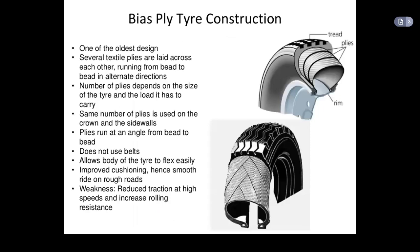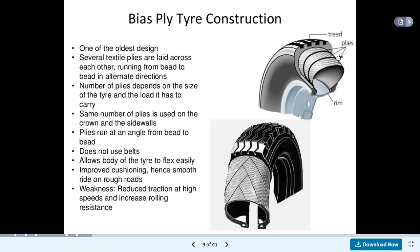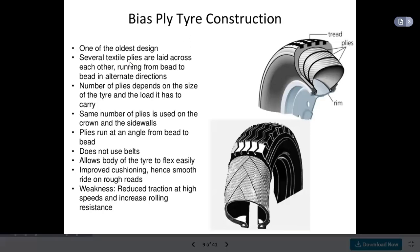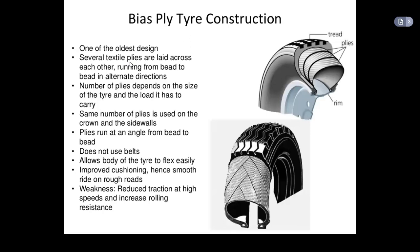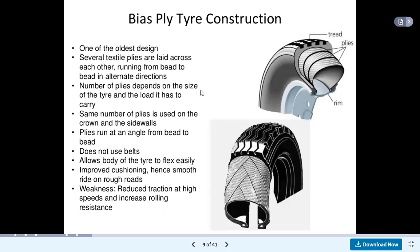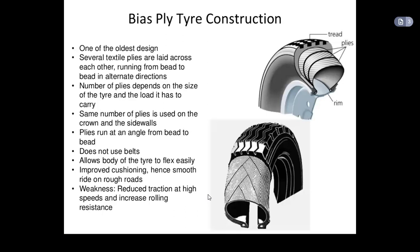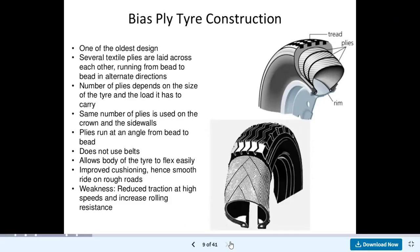Bias ply tyre construction: this is the tread, then these are the plies. One of the oldest designs — several textile plies are laid across each other, running from bead to bead in alternate directions. The number of plies depends on the size of the tyre and the load it has to carry. The same number of plies is used on the crown and the sidewalls. Plies run at an angle from bead to bead, does not use belts, allows the body of the tyre to flex easily, providing improved cushioning and a smooth ride on rough roads. Its weakness is reduced traction at high speed and increased rolling resistance.